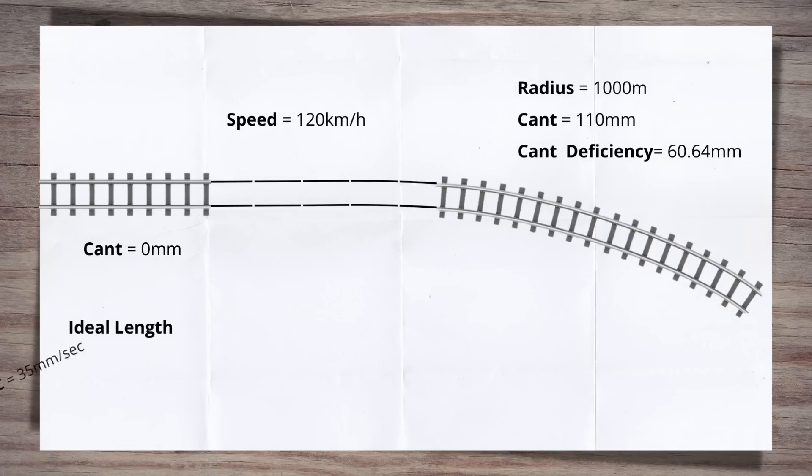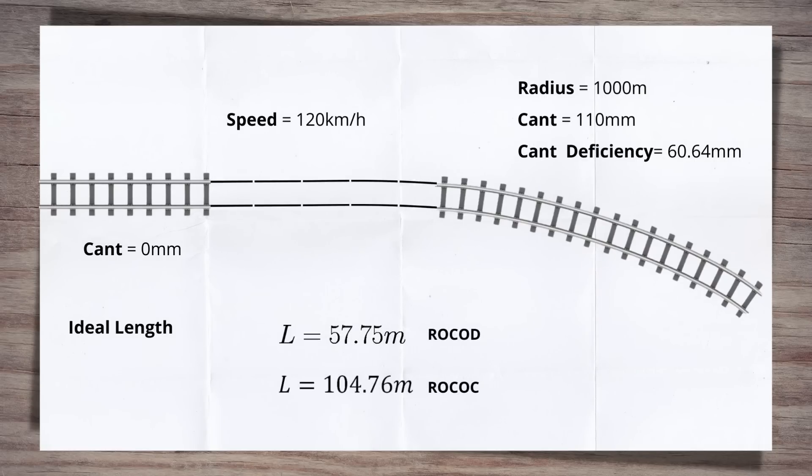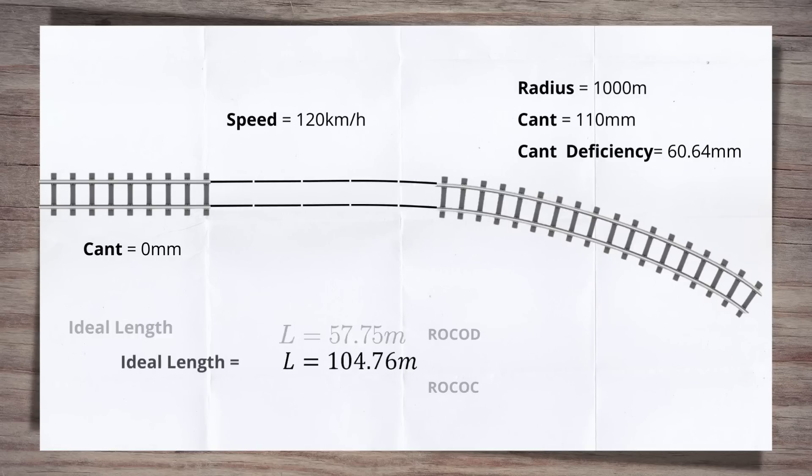Do the same for the cant deficiency. The numbers are all the same, apart from our change in cant deficiency, which is 60.64. This gives 57.75 metres as our L value. So now we have two values for L. We need to take the longer of the two to meet the desirable limits. This is because the shorter length, the 57.75 metre length, is calculated for the rates of change of deficiency, which would mean the rate of change of cant is higher than the normal or desirable limit. So our desirable length for this transition is 104.76 metres.